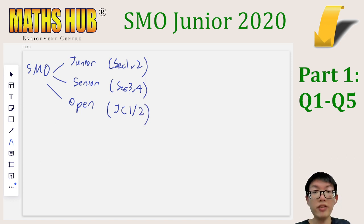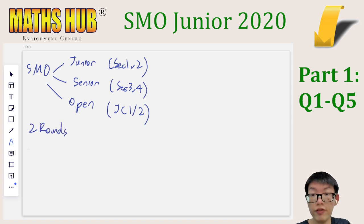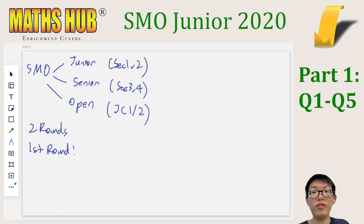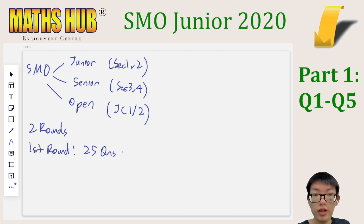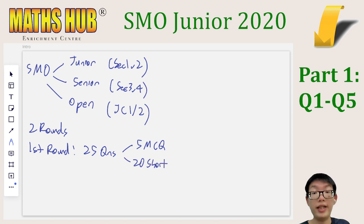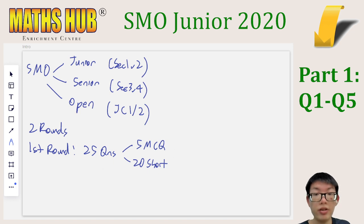Now each of these consists of two rounds. The first round, which is what we are focusing on in this video, for the SMO Junior and Senior, has 25 questions — of which 5 of them are multiple choice, and 20 of them are short questions with a single answer required. Each of these is worth 1 point, and the total time allotted is 2.5 hours.